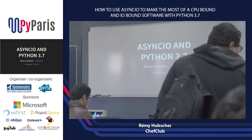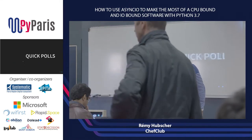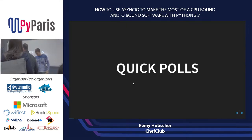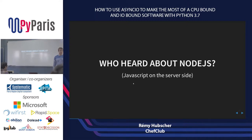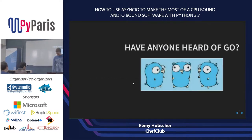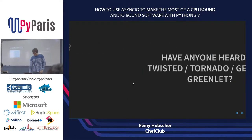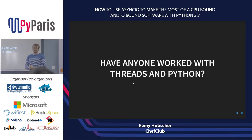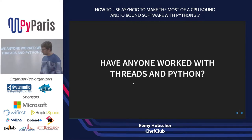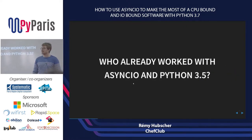Today I'm going to talk about AsyncIO. Before we start, I have a quick poll — actually a couple of polls. Have any of you heard of Node.js? About everyone. Have you heard of Go? Have you heard of one of these frameworks: Twisted, Tornado, G-Event, Greenlet? And does anyone work with threads and Python? Most of you probably know a bit about this talk, especially those who have worked with AsyncIO and Python 3.5.